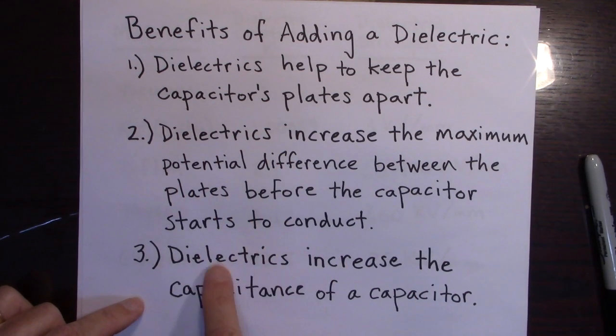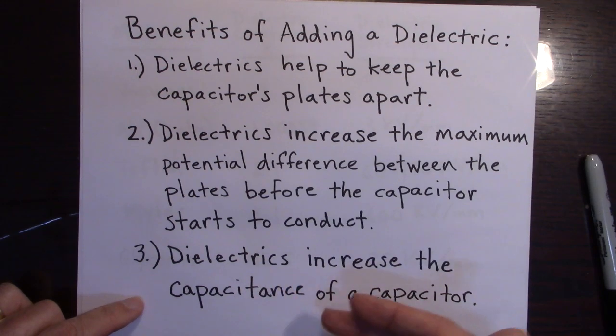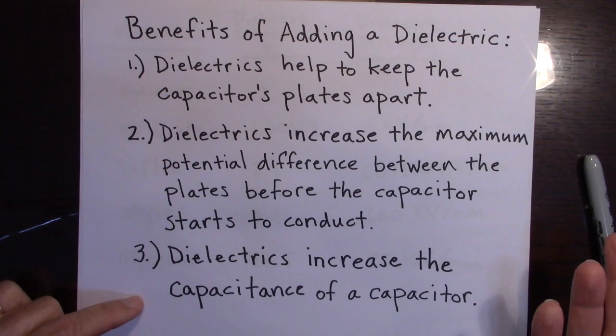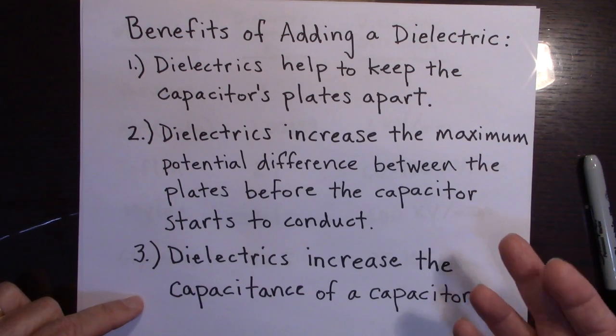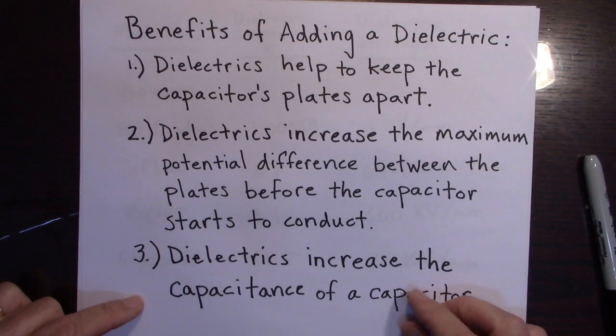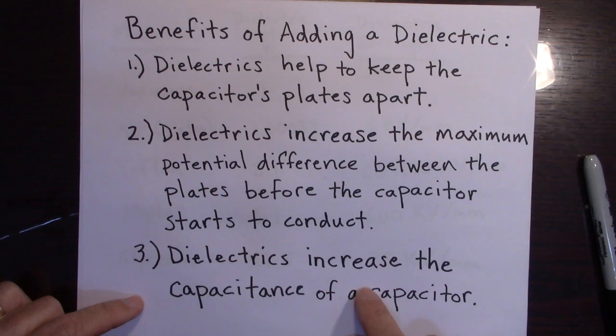And then it also increases the capacitance. So whenever you add a dielectric to a capacitor, you're going to increase the capacitance because the K value, or the kappa value, the dielectric constant of any insulating material is bigger than one. So it's always going to be increasing the capacitance. And that was the previous video that I explained why that happens, why it increases the capacitance.